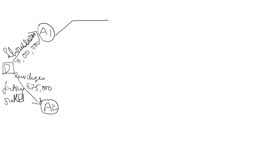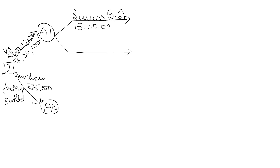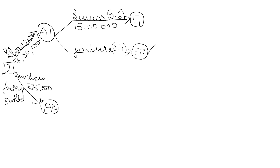For Option A, the showroom: if it is a success, the probability is 60% (0.6) at an amount of 15 lakh — we call this E1. Coming to E2, if success is 60%, then failure is 40%, so 0.4 is the failure probability. The amount for failure is not given directly — it needs to be found out. If this gets a failure, there are another two options.